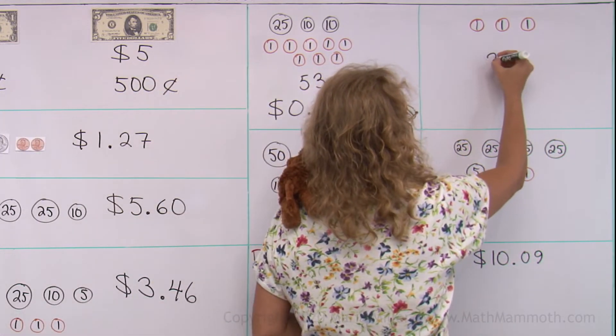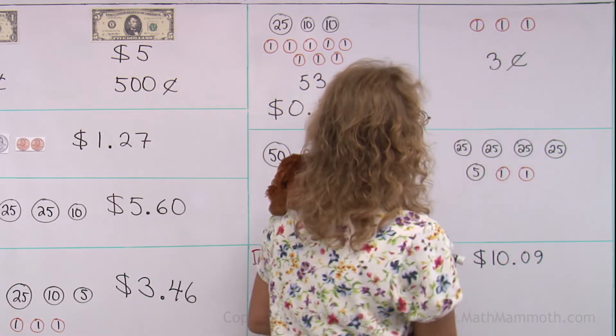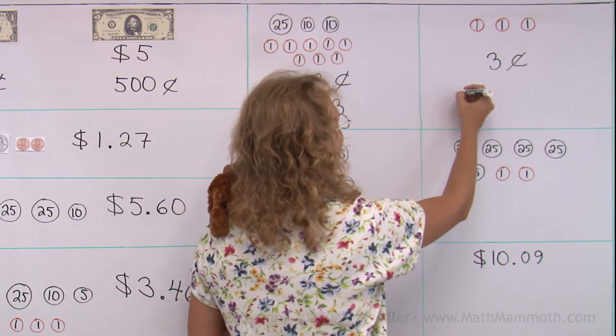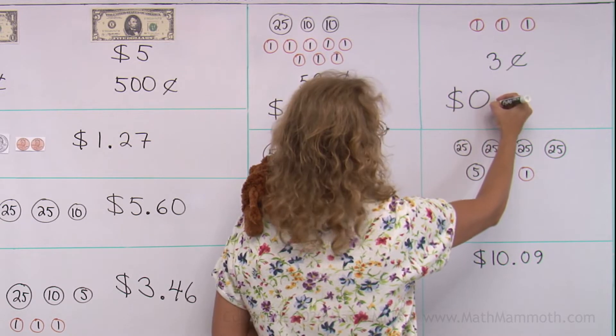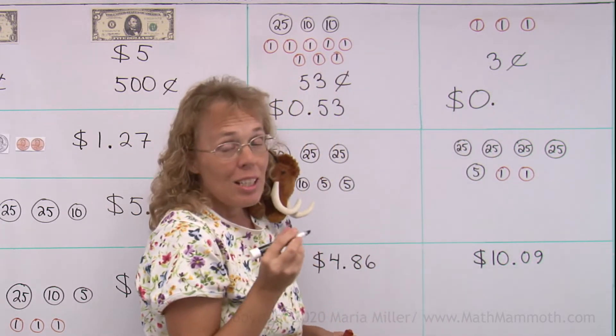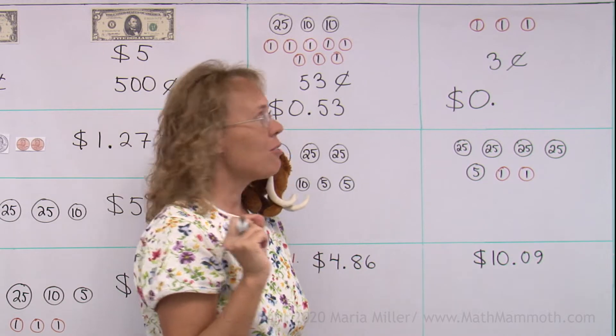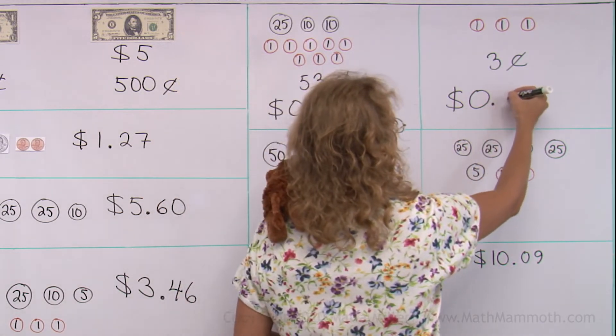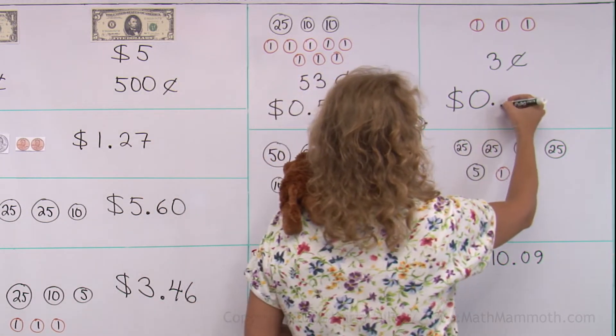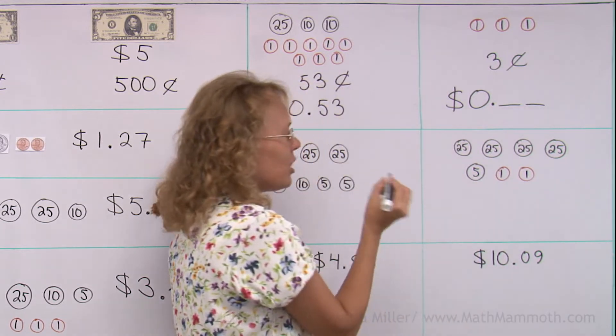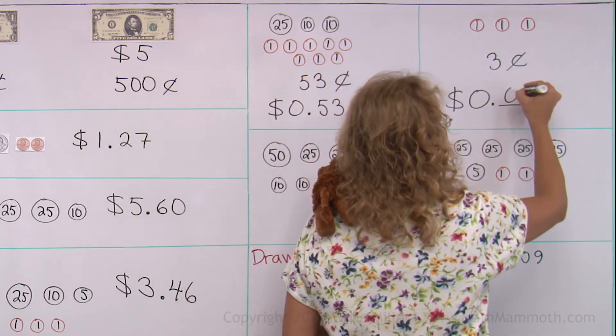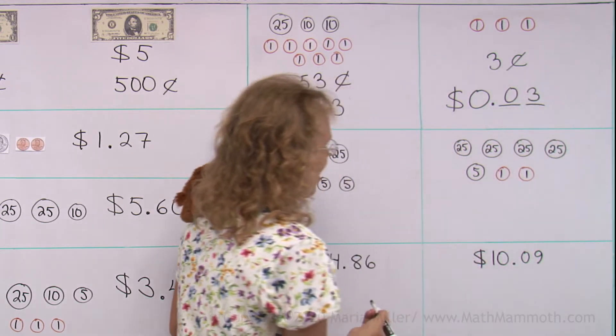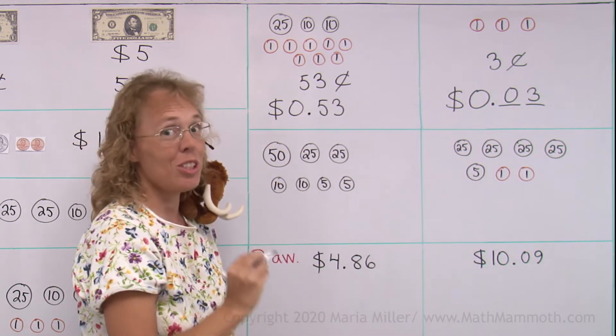I can write three cents, but I can also use the dollar symbol like this, dollars and there's zero dollars and then the point. And then comes something that sometimes is a little confusing. You cannot write three alone here. We actually always need to use two digits after the decimal point. So I need to write zero-three. Take a note of that. You need to learn that well.